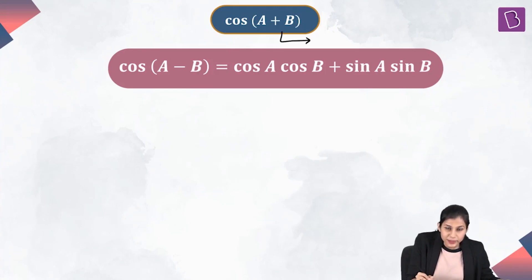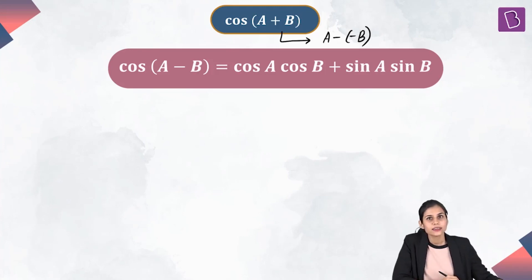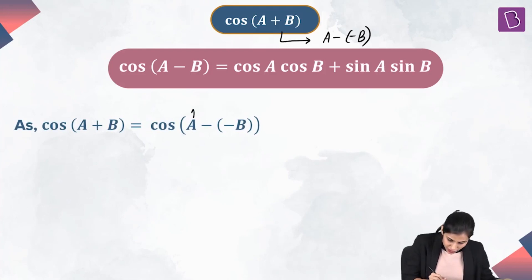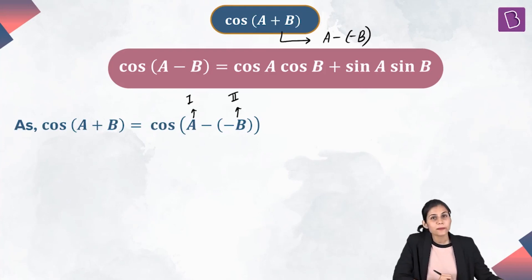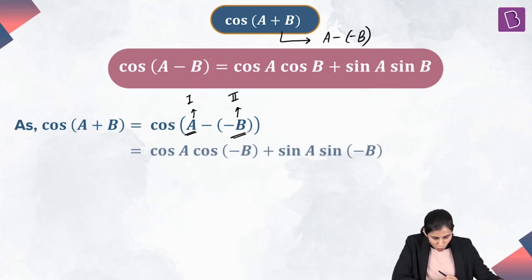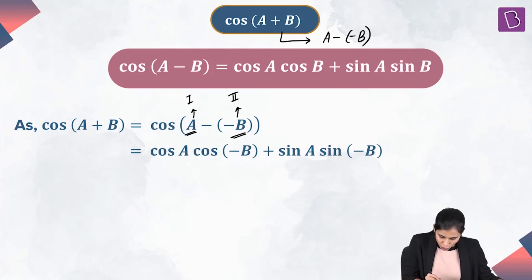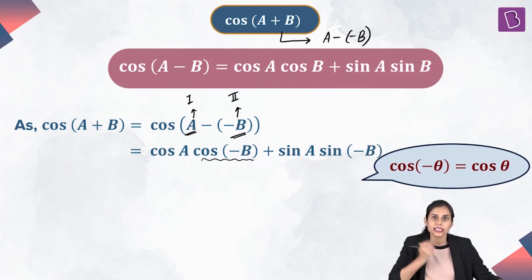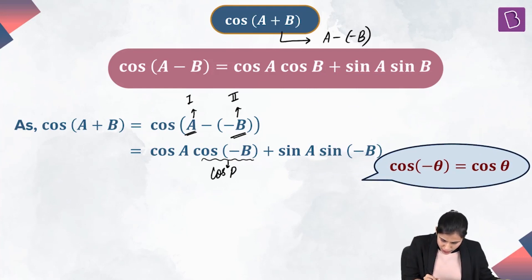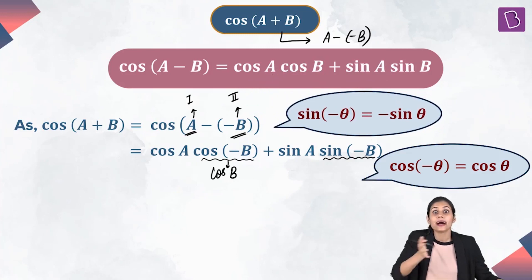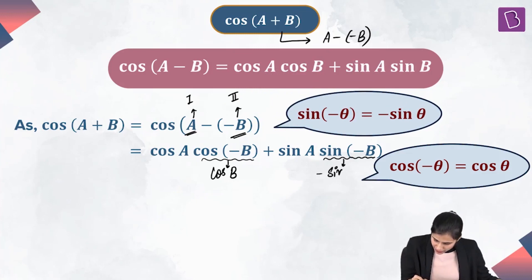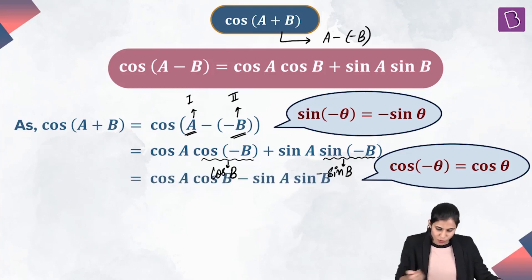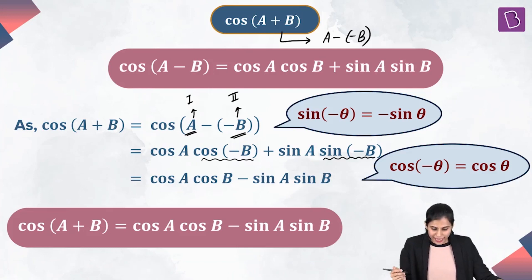Using this, let's compute the cosine ratio of the compound angle A plus B. Realize that A plus B can be written as A minus (minus B), and hence cos(A+B) equals cos(A−(−B)). Treating A as the first angle and minus B as the second angle, and applying the formula, we get cos A times cos(−B) plus sin A times sin(−B). Now cos(−θ) equals cos θ, so cos(−B) is replaced by cos B. And sin(−θ) equals minus sin θ, so sin(−B) becomes minus sin B. Therefore, cos(A+B) equals cos A cos B minus sin A sin B.